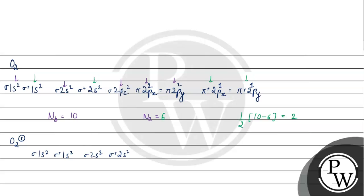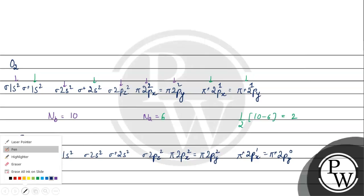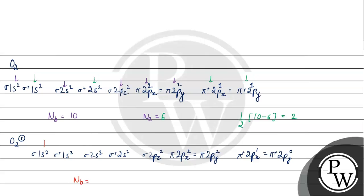For O2 plus: sigma star 2s2, sigma 2pz2, pi 2px2 equals pi 2py2 — we have 14 electrons. One electron goes to pi star 2px, and pi star 2py has zero electrons. Number of bonding electrons: 2, 4, 6, 8, 10. Antibonding electrons: 2, 4, 5. Bond order is 10 minus 5 by 2, equals 5 by 2, that is 2.5. Bond order of O2 plus is 2.5.